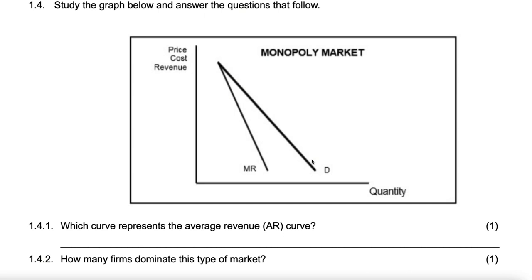Question number one: which curve represents the average revenue curve? That's the demand curve D — this one here, not MR. D and AR are equal, but they are not equal to MR.